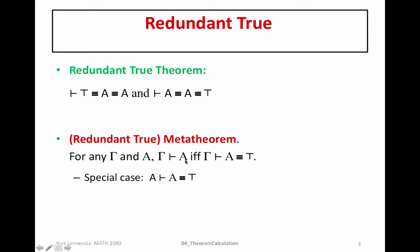If gamma is A, then having that A proves A — which we know is true — implies that A proves A is equivalent to top, because we replace gamma by A. This is going to be a very important property that we're going to apply to help us prove other theorems later on, and something we'll continue to use.